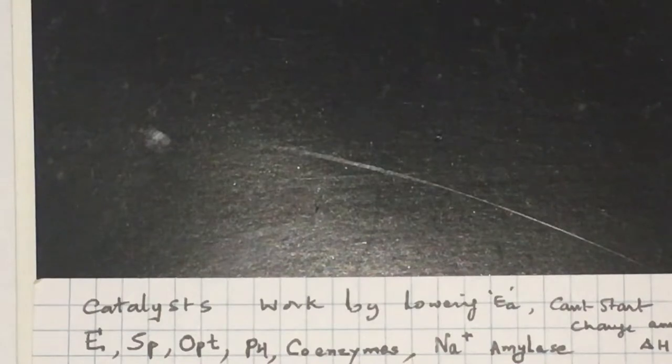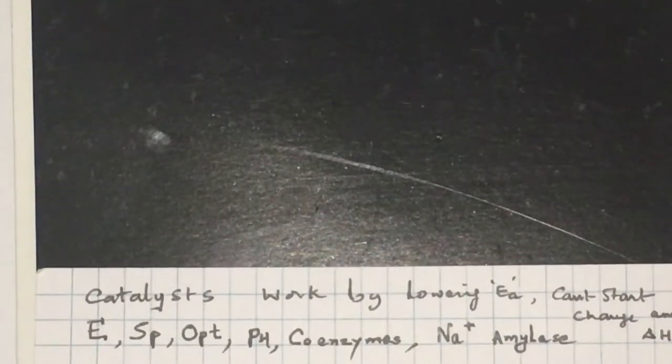The non-enzyme part present in an enzyme sometimes is called coenzyme. For example, Na+ is a particular ion associated with amylase that speeds up its activity.